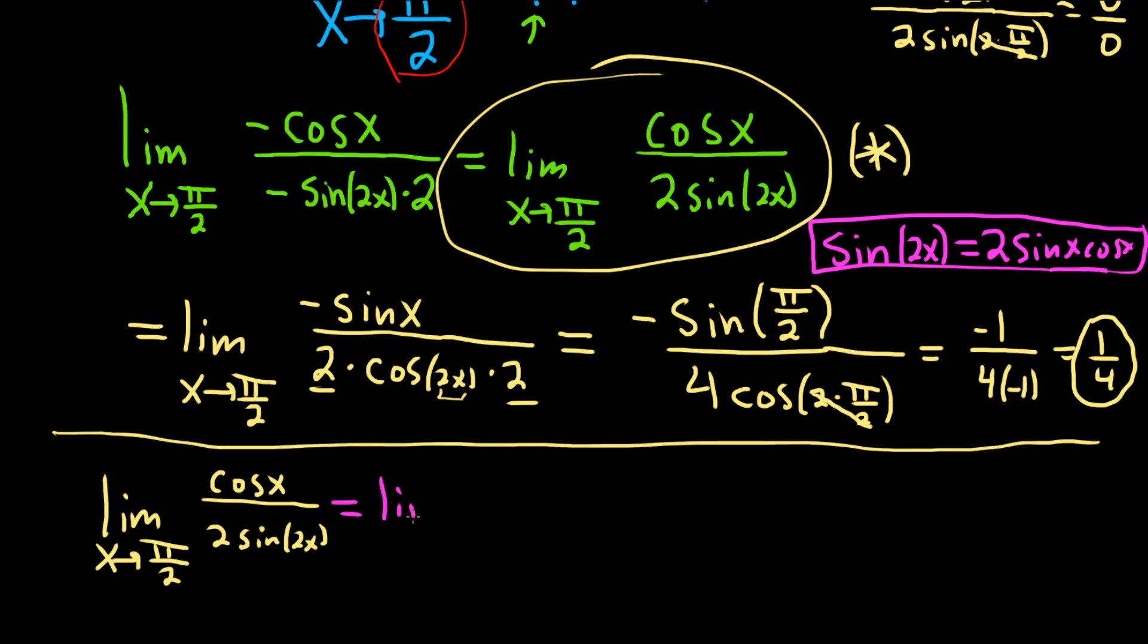So this is the limit as x approaches pi over 2 of cosine x over 2, and then we have this identity, so 2 sine x cosine x. And I don't know if it's going to work yet. What happens here? The cosines cancel. So we get the limit as x approaches pi over 2 of 1 over 4 times sine x. Oh, it does work. How beautiful.